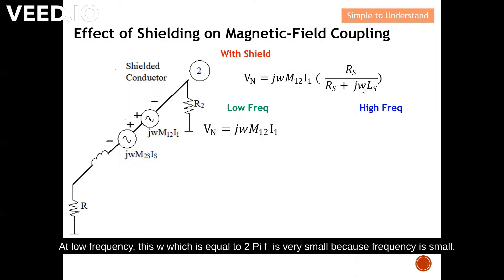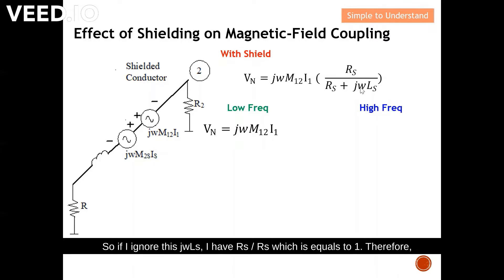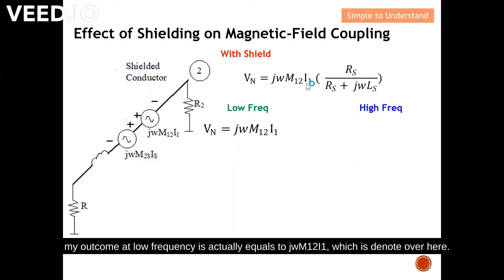At low frequency, omega — which equals 2πf — is very small because frequency is small. Therefore, for low frequency, I can ignore the jωLs term. If I ignore jωLs, I have Rs over Rs, which equals one. Therefore, the outcome at low frequency is actually equal to jωM12·I1, as denoted here.